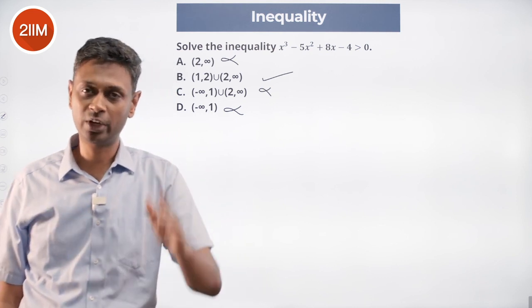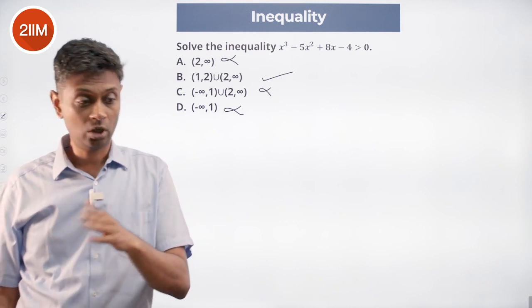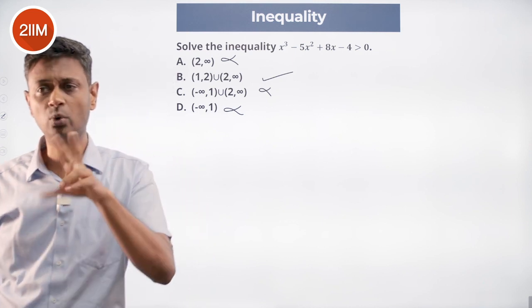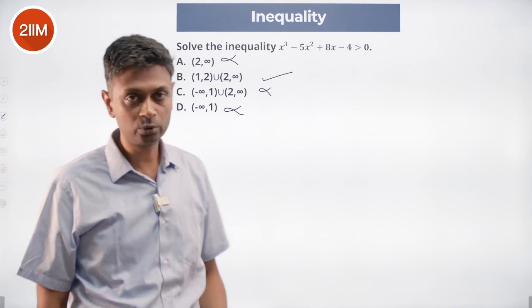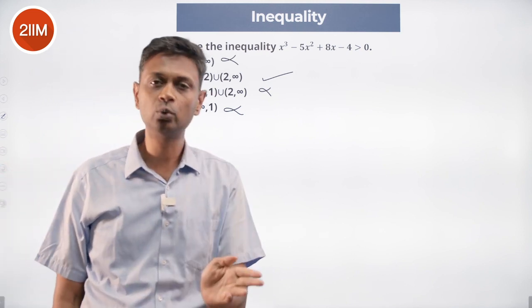1 to 2, 2 to infinity - every value greater than 1 except 2. That's open interval 1, open interval 2, and then open interval 2, open interval infinity.